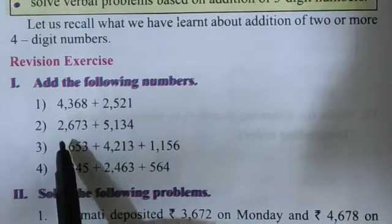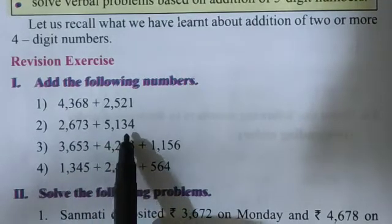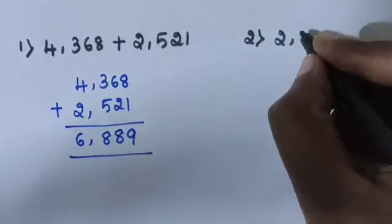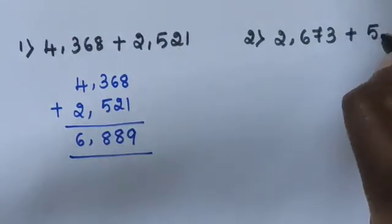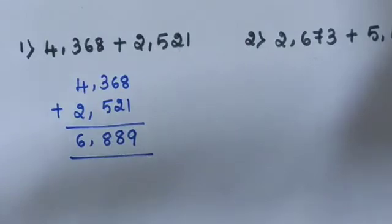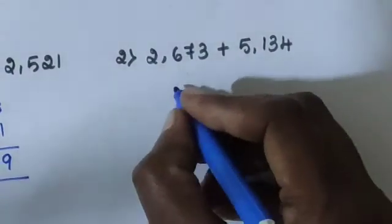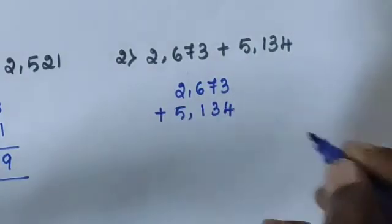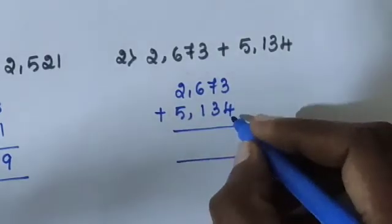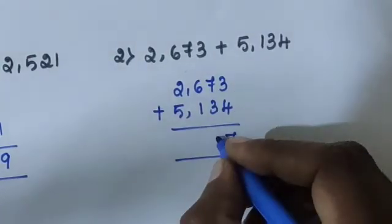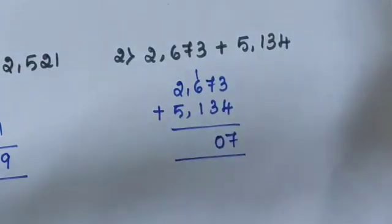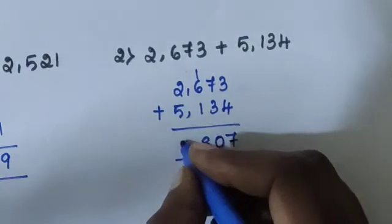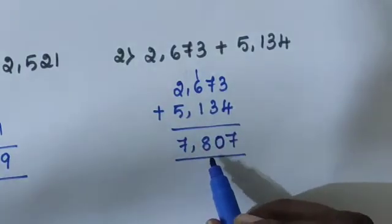Next, question number 2: 2673 plus 5134. 2673 is added by 5134. 3 plus 4 equals 7. 7 plus 3 equals 10. 10 gives 0 with 1 carry. 1 plus 6 equals 7, plus 1 equals 8. 2 plus 5 equals 7. The total answer is 7807.